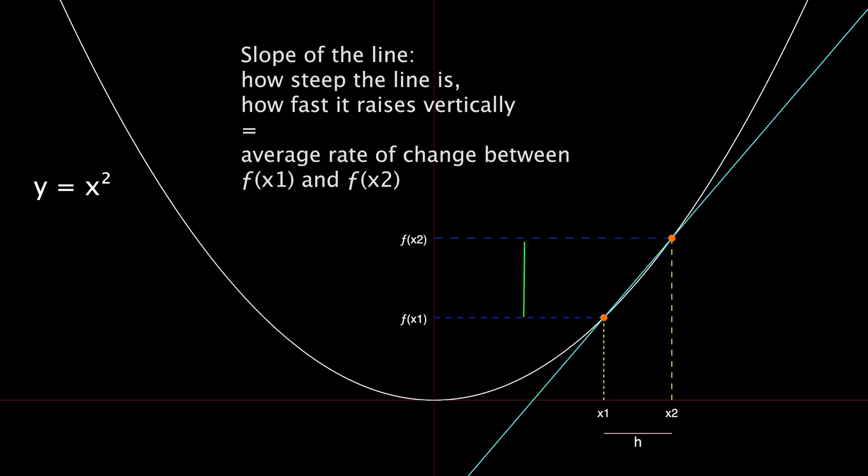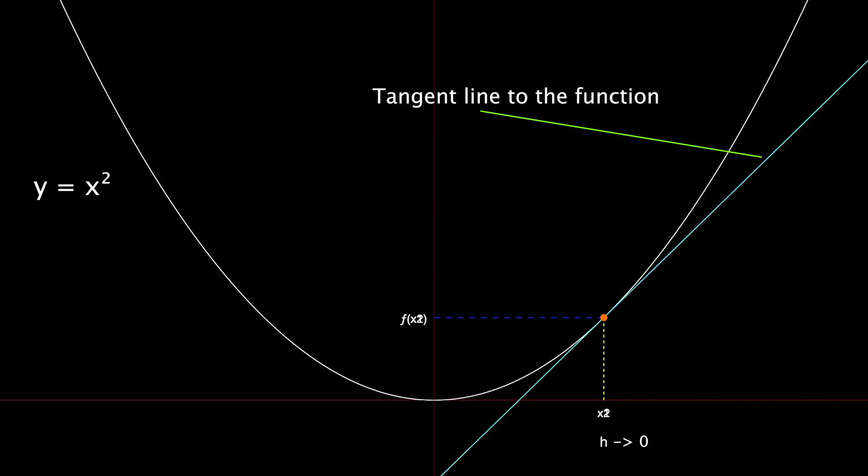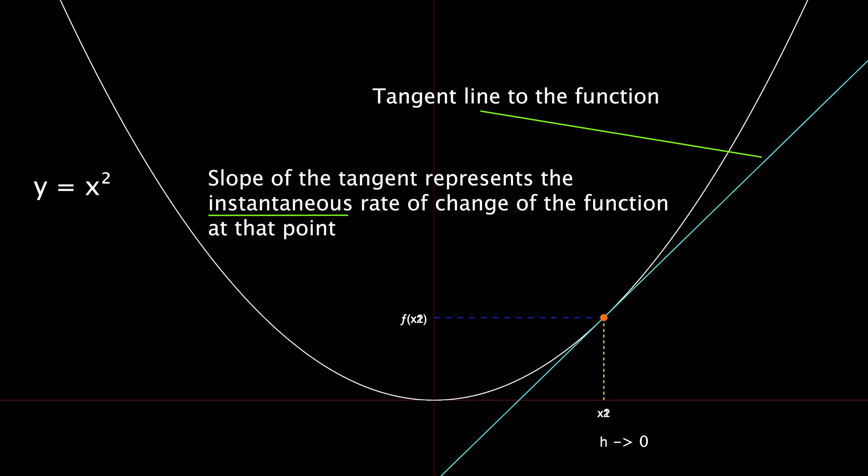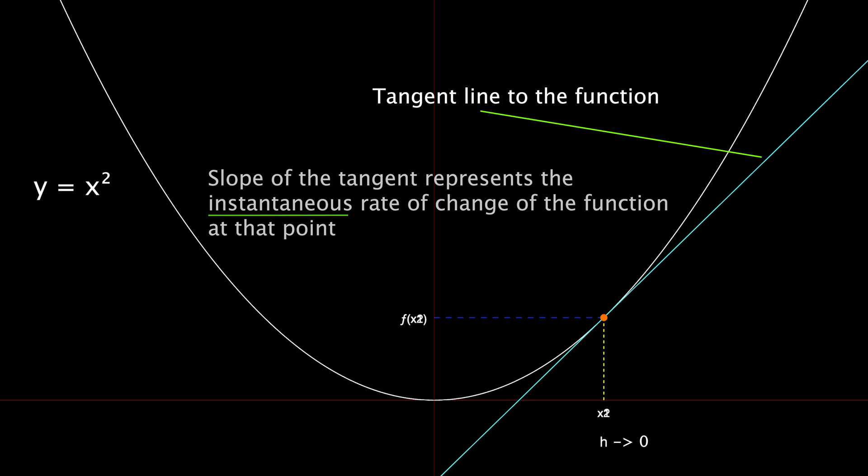So what happens when we bring the x-coordinates x1 and x2 very close to each other by reducing the distance h to almost zero? The line that connects those two points becomes the tangent to the parabola. And the slope of that line is now not anymore the average rate of change, but the instantaneous rate of change of the function, which is exactly how much that function is increasing or decreasing at that point. So the derivative of the function for a certain input can be visualized as the slope of the tangent line to the function at that input.